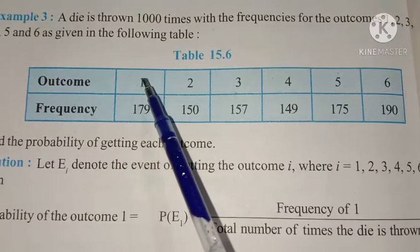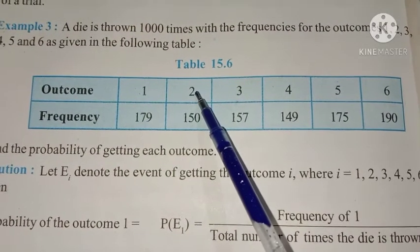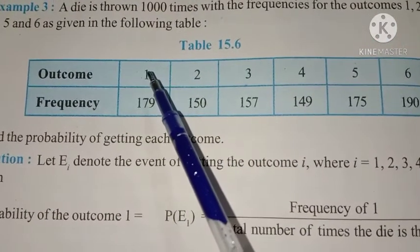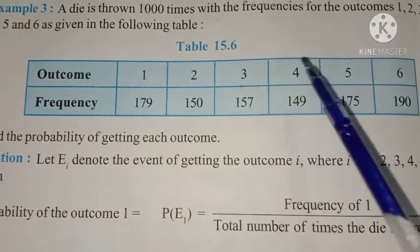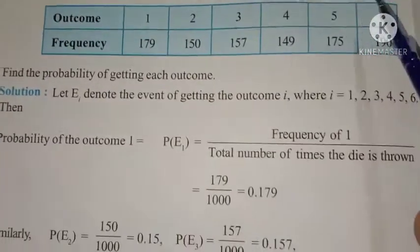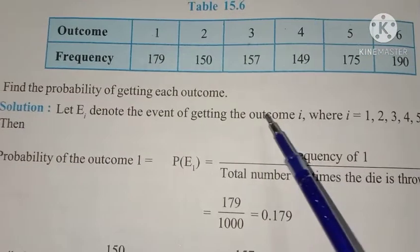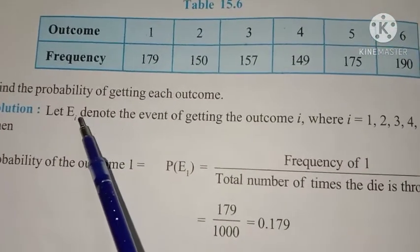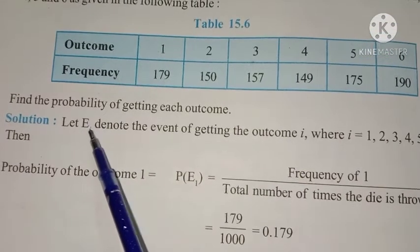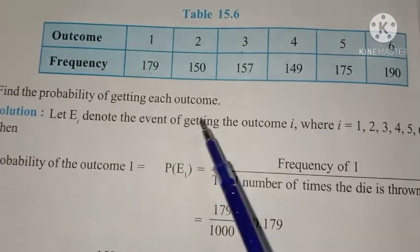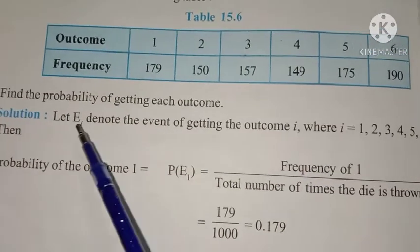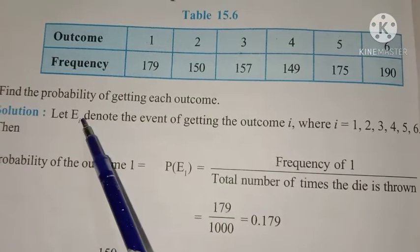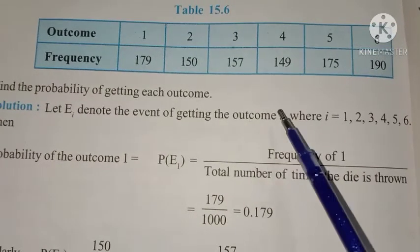Let us consider getting each number as a separate event. We define E1, E2, E3, E4, E5, E6, where Ei denotes the event of getting the outcome i, for i equal to 1, 2, 3, 4, 5, 6. So E1 denotes the event of getting outcome 1, E2 denotes getting outcome 2, E3 denotes getting outcome 3, and so on.